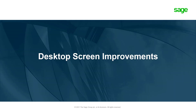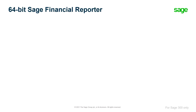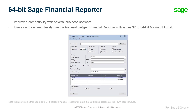Now let's review the desktop screen improvements. Users now have the 64-bit Sage Financial Reporter that provides improved compatibility with several business software. This means users can now seamlessly use the general ledger financial reporter with either 32 or 64-bit Microsoft Excel.